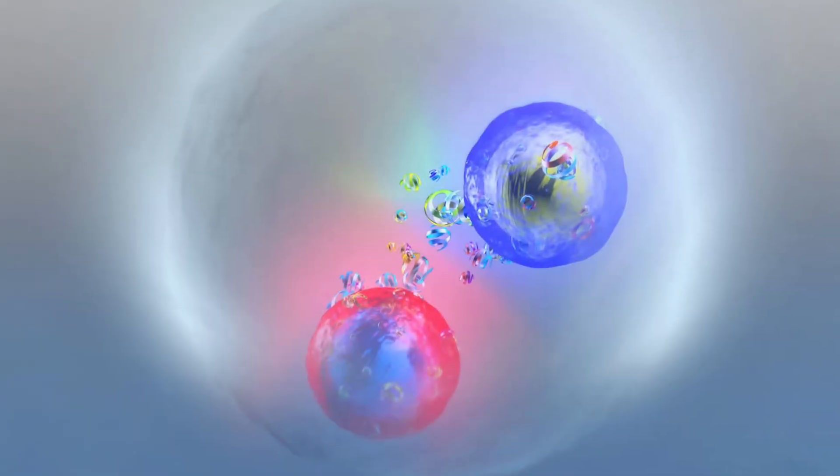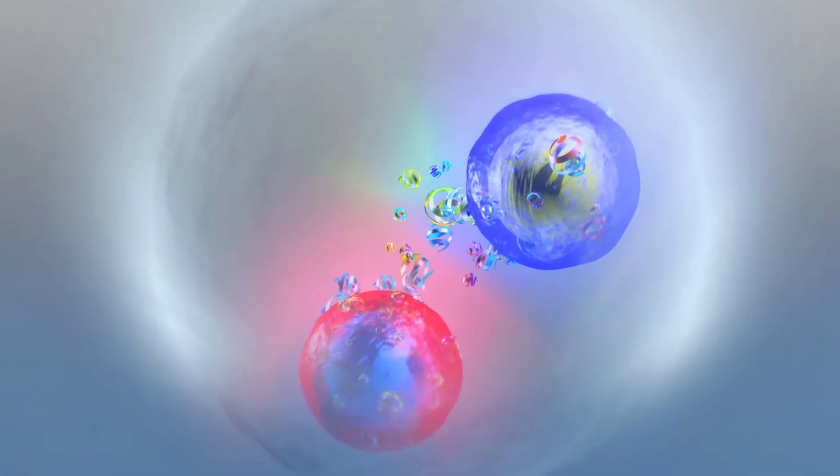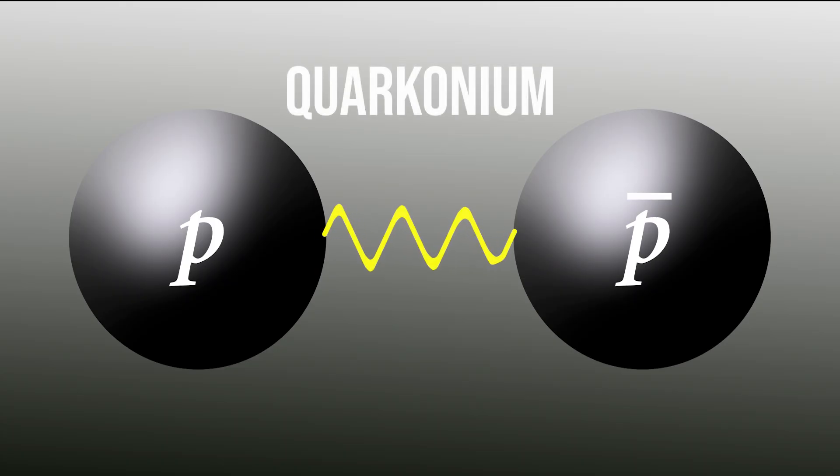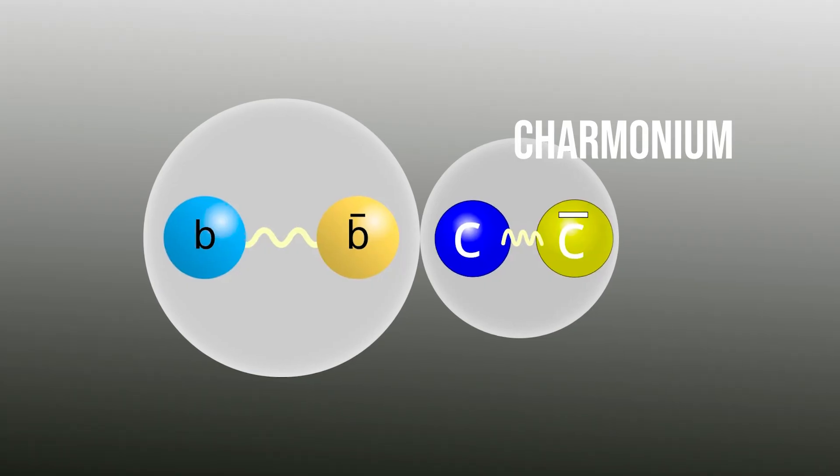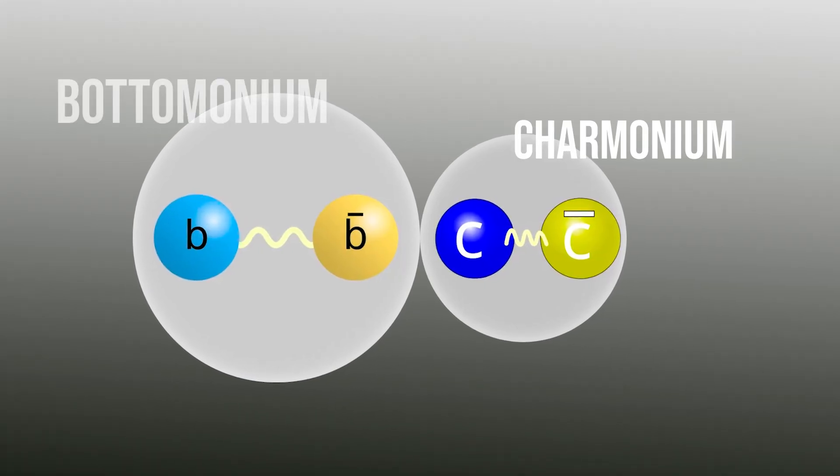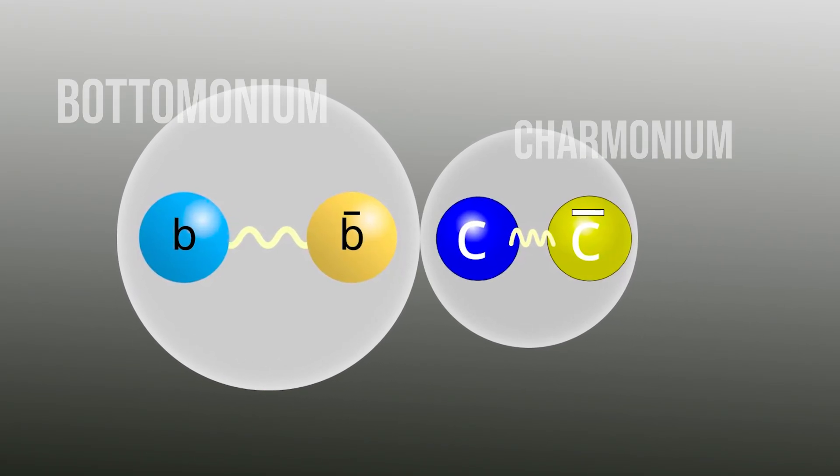But what exactly is toponium? In basic terms, it's a quarkonium, a bound state between a quark and its anti-quark. You might have heard of other quarkoniums. Charmonium, formed by charm and anti-charm quarks. Bottomonium, formed by bottom and anti-bottom quarks.